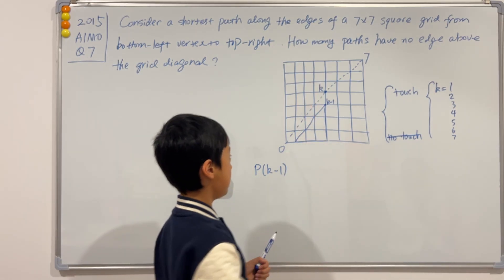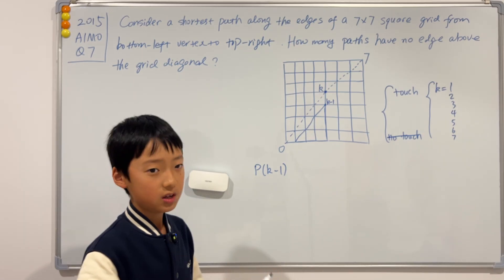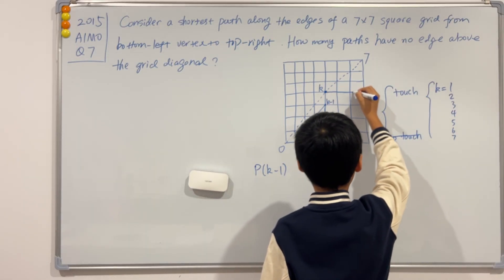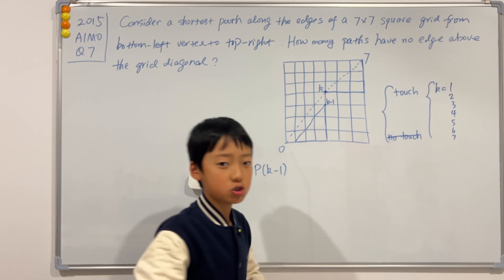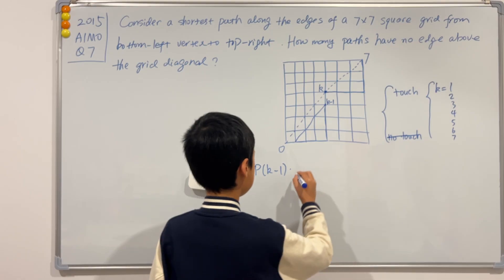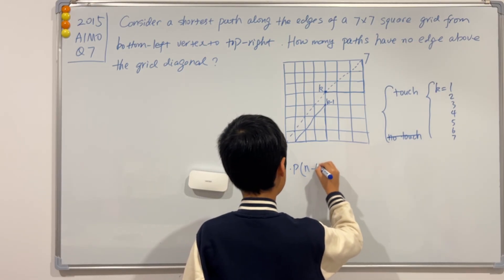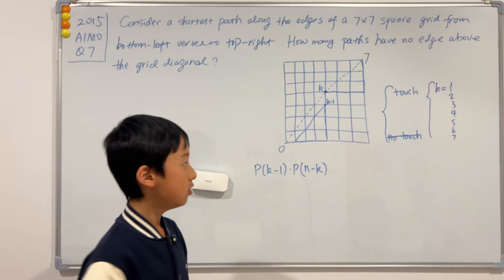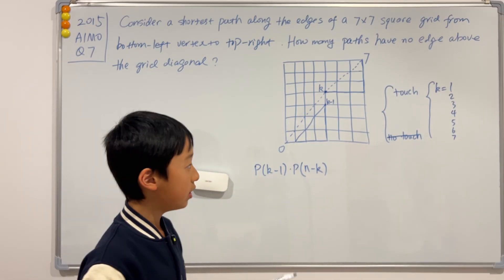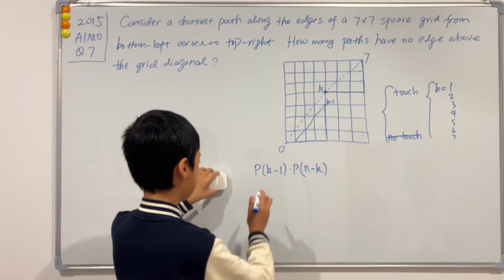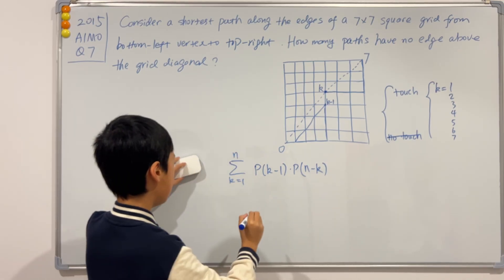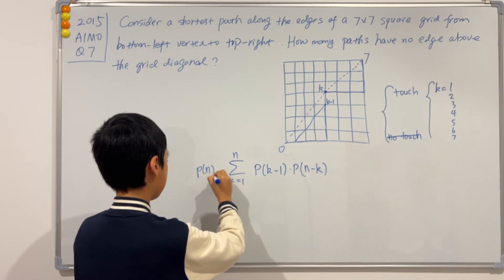After k, it will be the same pattern as before — still this triangle. To make it more general, I'll change 7 to n. So you multiply by p(n minus k). Now we have to add all of this up from k equals 1 to n. So we add a sigma with k going from 1 to n. p(n) equals this sum.